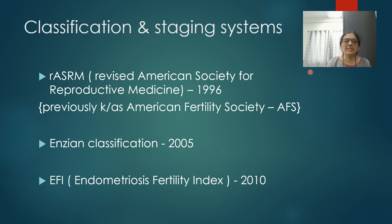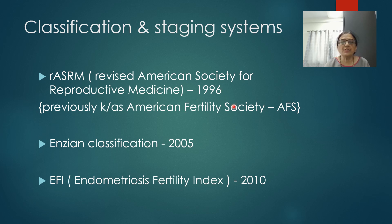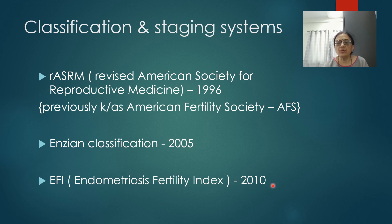Classification and staging systems of endometriosis: we have three classification systems. First is the r-ASRM — the American Society for Reproductive Medicine classification, previously known as the American Fertility Society or AFS classification, revised in 1996. Second is the Enzian classification introduced in 2005. Third is the Endometriosis Fertility Index introduced in 2010.